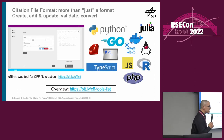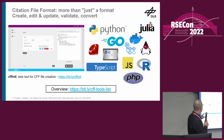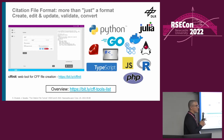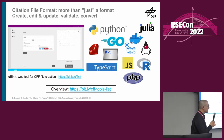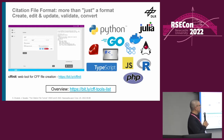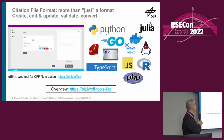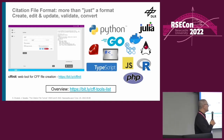It's also more than just a format. Specifically, the CCC built a tool called CFFinit - it's an initializer, a web form basically. You can put in all the information you want in the CFF file manually and then download it and put it in your repository. We have different tools for working with CFF: creating files, editing, updating, validating, and converting to other formats such as CodeMeta, Zenodo JSON, RIS, BibTeX, etc., in a variety of languages and tool formats.